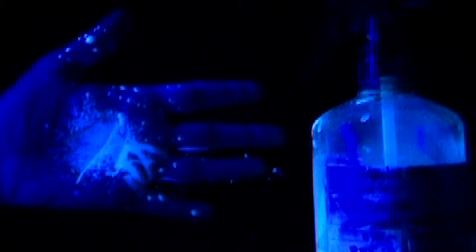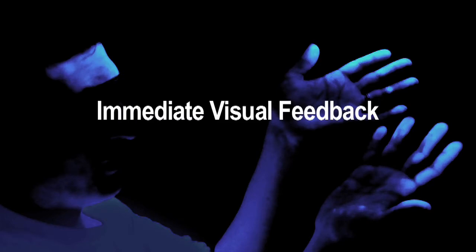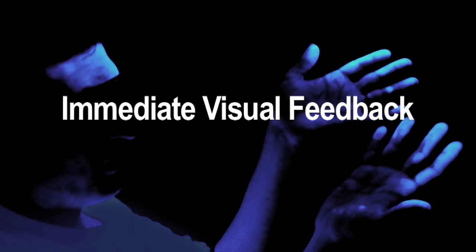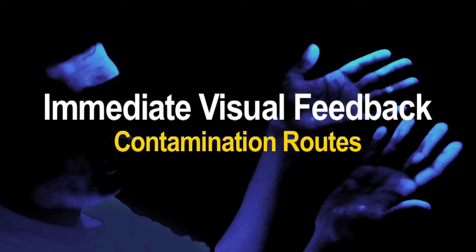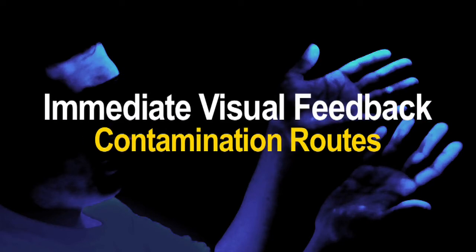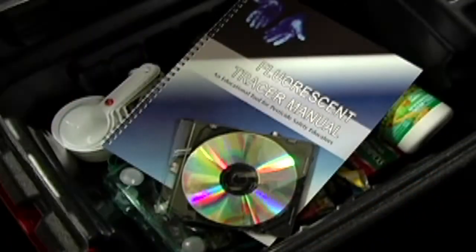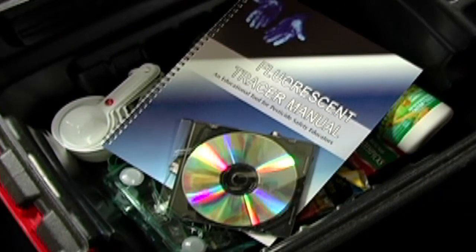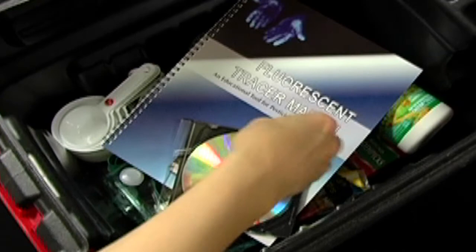Unlike pesticides, they glow under a special lamp called a black light. This glow can show potential areas of contamination. Using the FT technique will provide immediate visual feedback and a clear picture of contamination routes. This DVD was designed to complement the fluorescent tracer manual and kit.